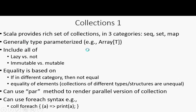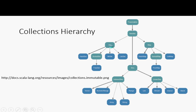Those categories — sets, maps, sequences — will be important for defining equality. Most of these are type-parameterized: you can have a Set[T] for any type T, or a Set[String]. For a Map, you give it two type parameters — the type of the keys and the type of the values — since those can have different types. So you might look up a String and get back a liveness rule, or look up a String and get back a person.